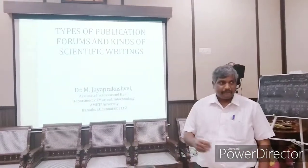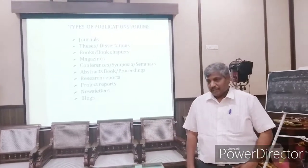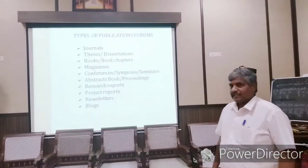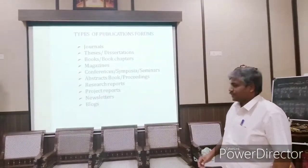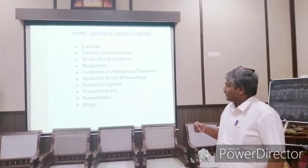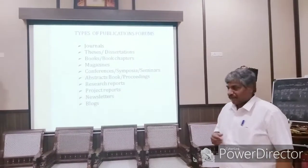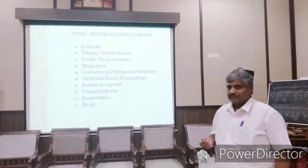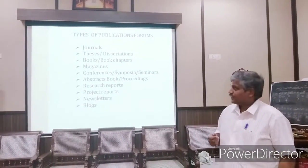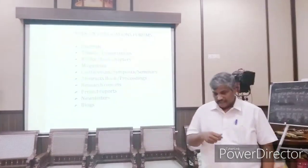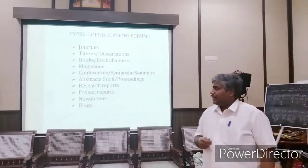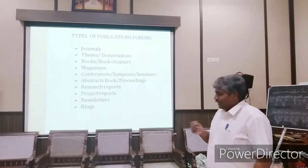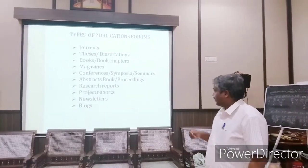When we talk about the different kinds of publication forums, we can publish our research outcomes in journals. We can publish our research outcomes as a thesis or dissertation in the case of academic research. We can also publish books or book chapters. Magazines also publish different research outcomes. And research outcomes can be presented in conferences, symposia, and seminars, and also published as abstract books or proceedings.